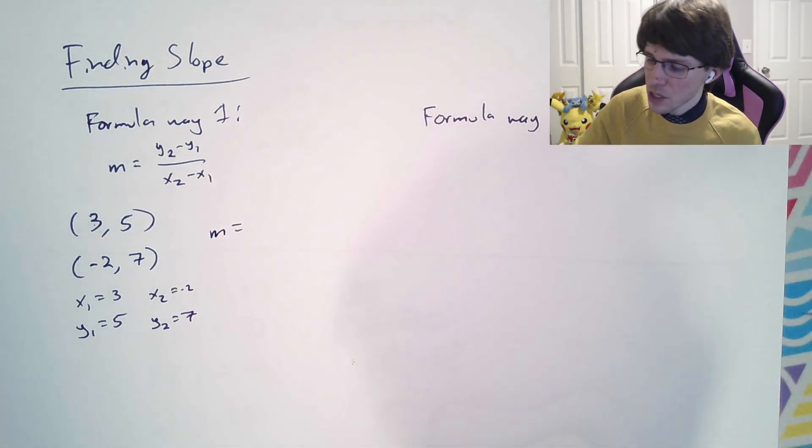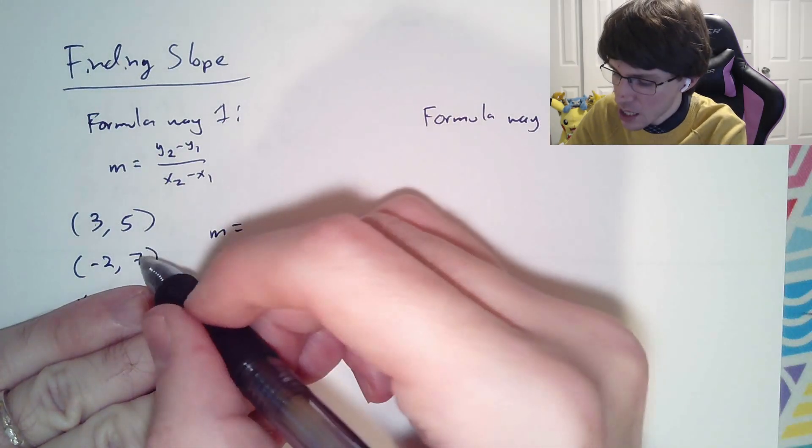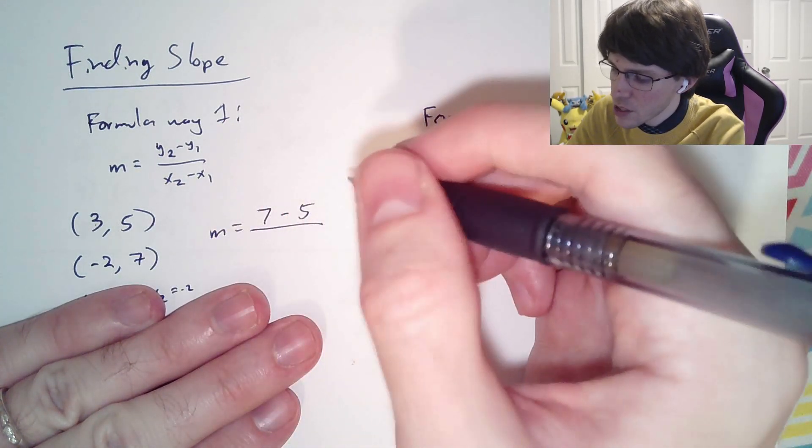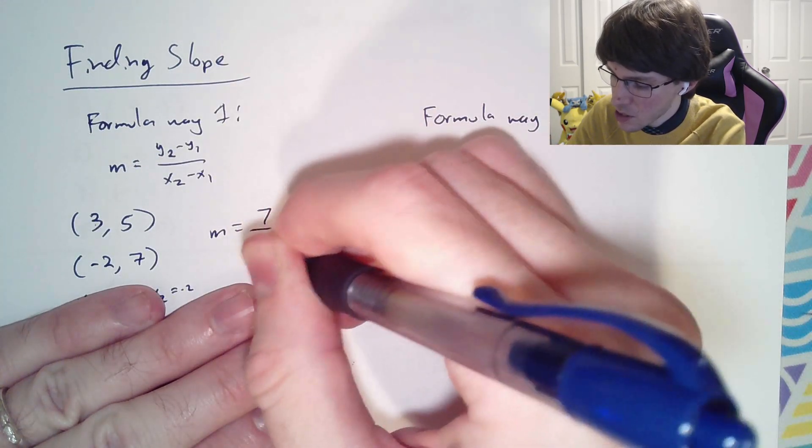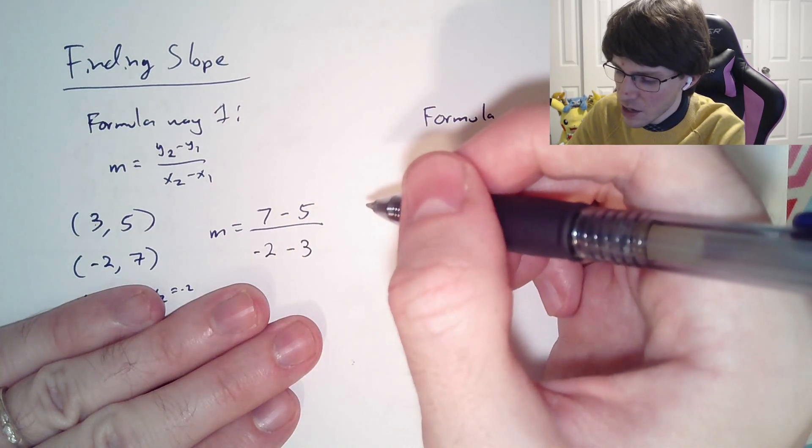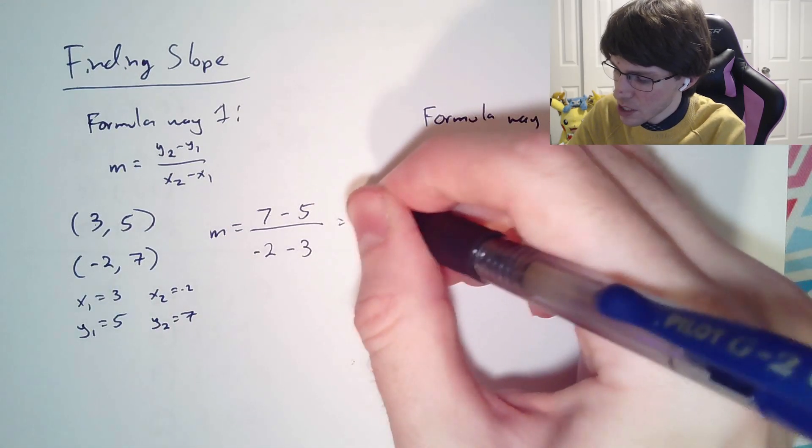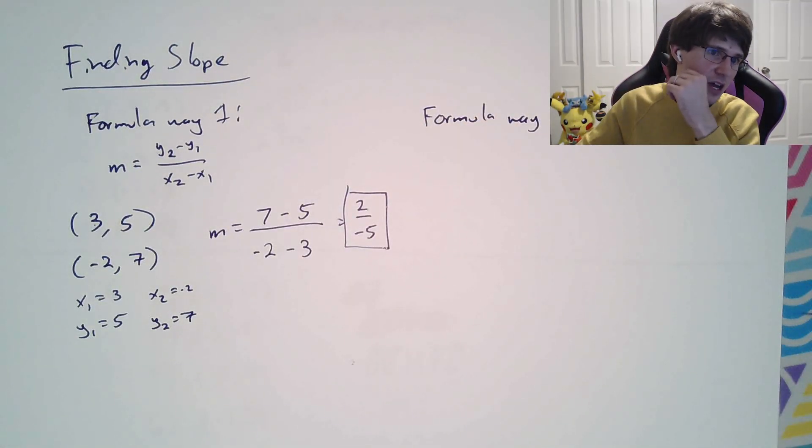Either way, for this particular question, I'm going to do it the way I think about it. I'm going to say it's the second y value minus the first y value divided by the second x value minus the first x value. We're going to end up with 2 over negative 5, and we would just leave it like this as our slope.